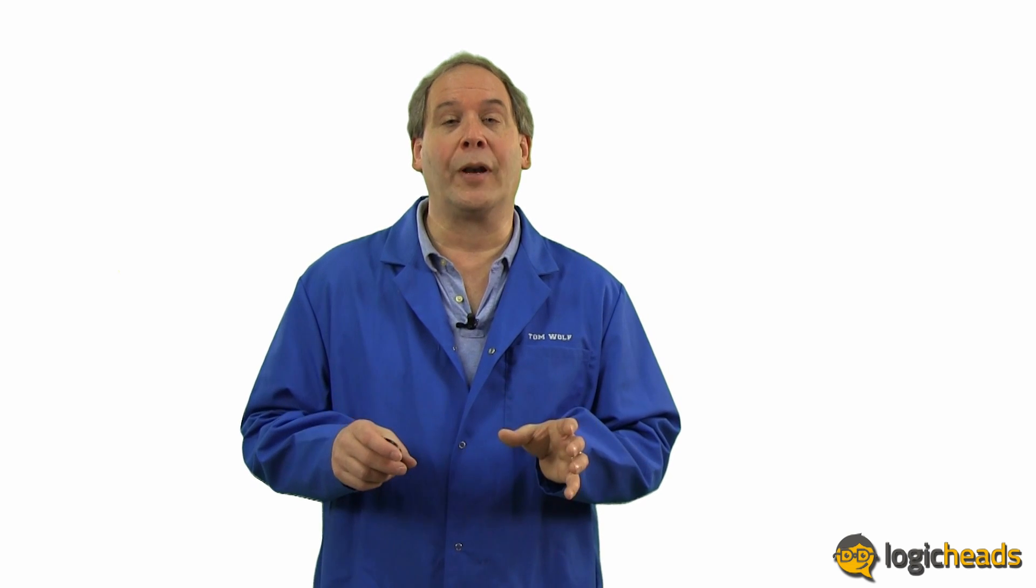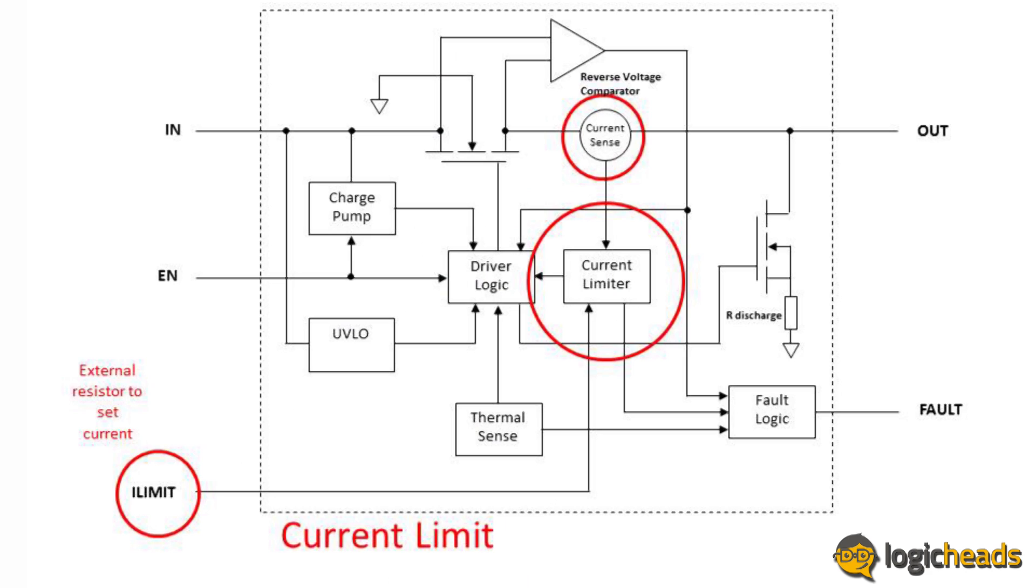One of the most desired features in a load switch is current limiting. Just like a circuit breaker in your house, if the current through the switch goes above a preset limit, the switch opens up or in some cases it actually becomes a current regulator to keep the current flow right at the maximum allowable value.